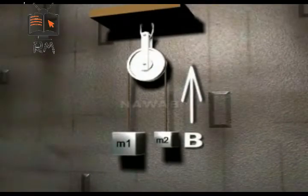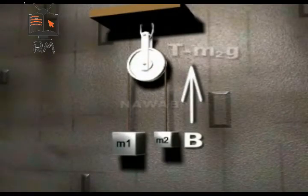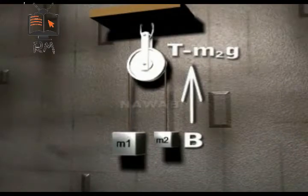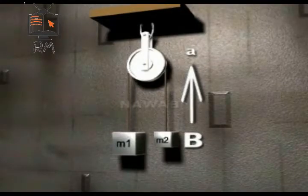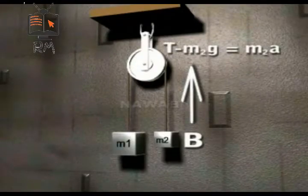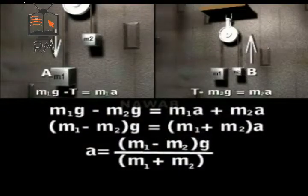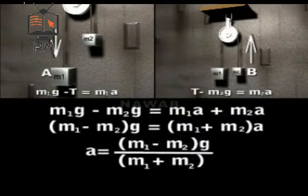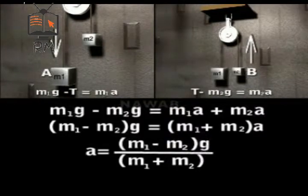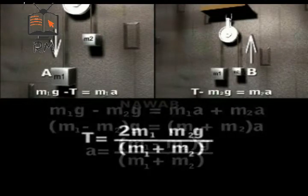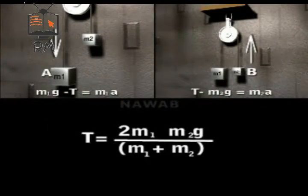As body B is moving upward, the resultant force acting upward on body B is T − M2G. It is moving upward with the same acceleration A. Therefore, according to the second law of motion, T − M2G = M2A. Adding the equations: M1G − M2G = M1A + M2A, which gives (M1 − M2)G = (M1 + M2)A, or A = (M1 − M2)G / (M1 + M2). Putting the value of A back, we get T = M1M2G / (M1 + M2).